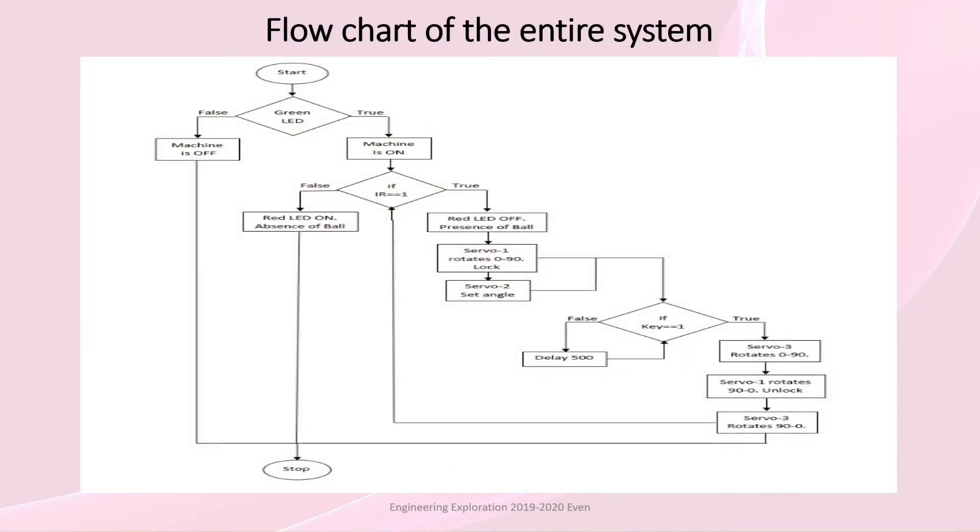Flow chart of the entire system. When power is supplied, the process starts. Green LED: When it is off, the machine is off and the process stops. When green LED glows, machine is on.